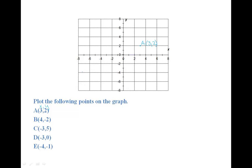Let's plot point B, four comma negative two. Go over to four on the x-axis, and down to negative two on the y-axis. Let's label our point.